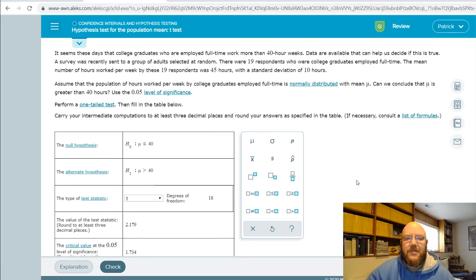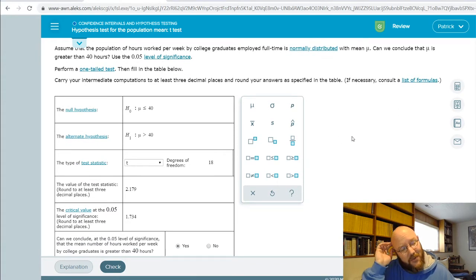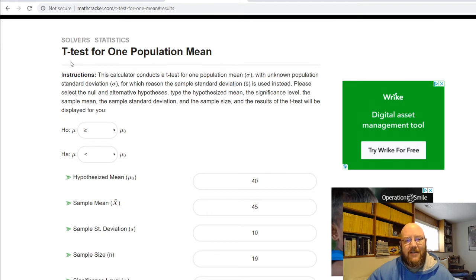So that's how you do a t-test here in Aleks using the calculator, or you can jump over to the Module 3 folder and pull up that handy-dandy hypothesis testing website, MathCracker, and you want to make sure you're on this test here, t-test for one population mean. Again, ignore the pop-ups.